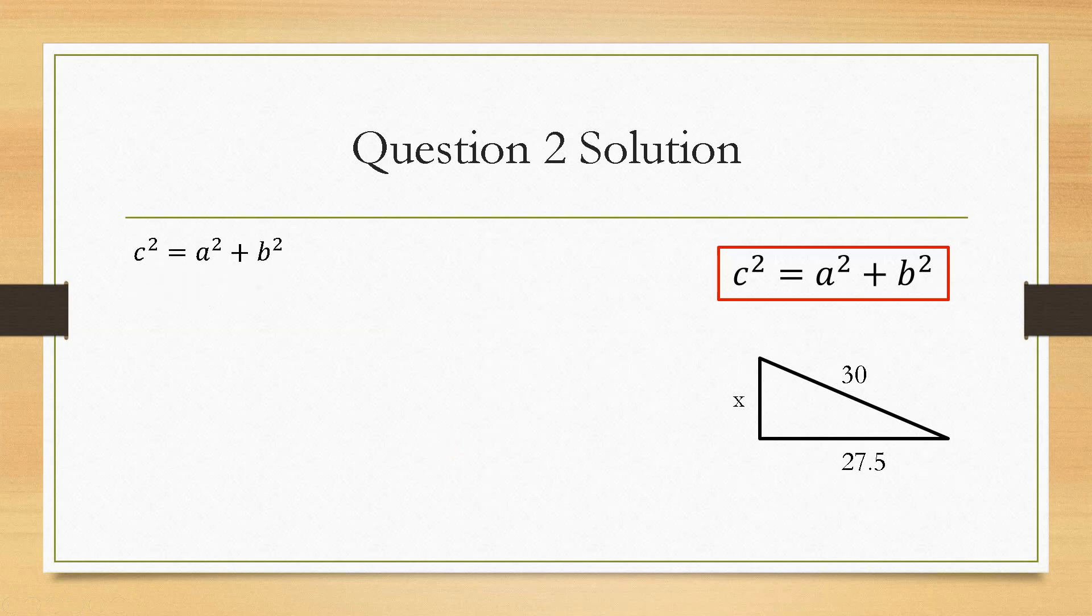So, using the same formula as before, c squared equals a squared plus b squared, we substitute in the values. However, this time, instead of finding c, we now need to find b. So, it's the same thing as before.